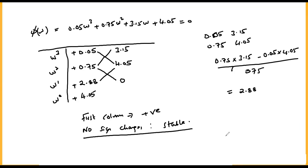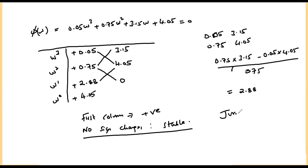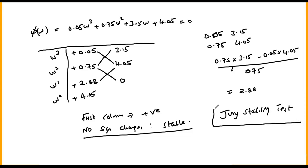That is the Routh stability criterion as used in stability analysis for discrete time systems. In my next video I'll be discussing the Jury's stability test for discrete time systems. Thank you for watching this video.